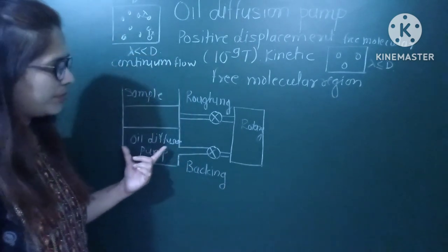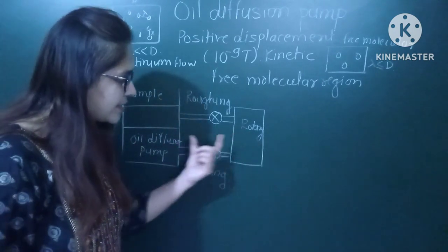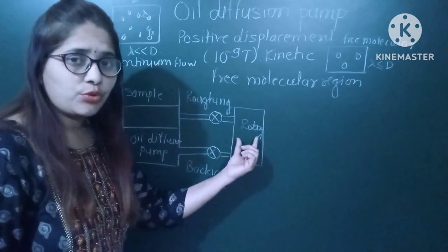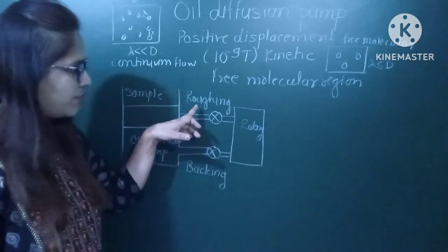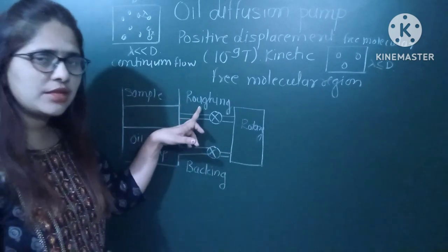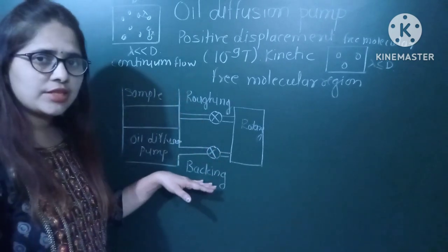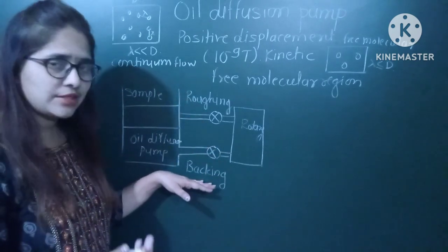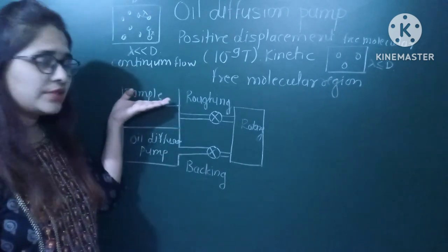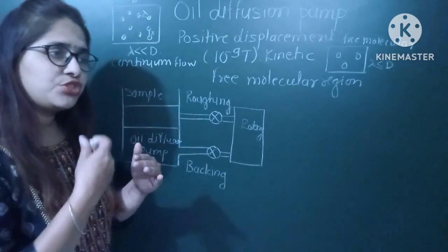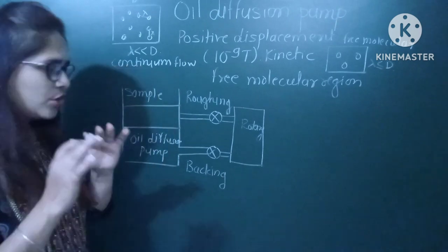The oil diffusion pump is connected to the rotary valve pump by two different valves. The first is called the roughing valve and the second is called the backing valve. This is the sample chamber where we want to generate the vacuum.